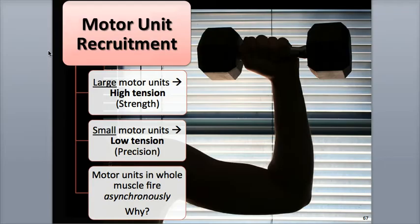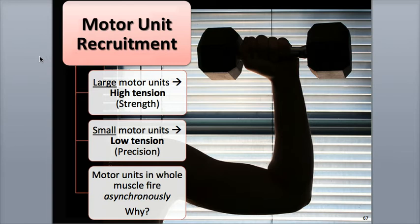Motor unit recruitment is a process that occurs when a muscle needs to generate a stronger force of contraction. It does so through the activation of large numbers of motor units where the weakest ones are brought in or recruited first and the stronger motor units are added in if more muscle strength is needed. Large motor units are able to generate high tension, high strength, with low precision, while smaller motor units allow muscles to carry out more precise movements but at a lower tension.